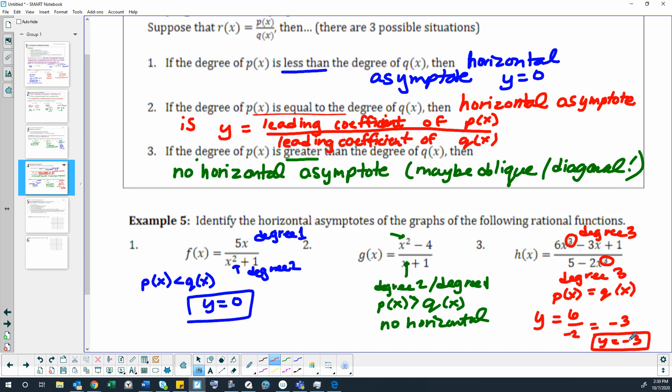The y equals is what tells us it's horizontal. Instead of, like in the last example, example four, we had x equals, because we were finding the vertical lines for those asymptotes.